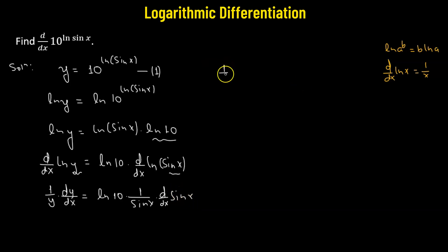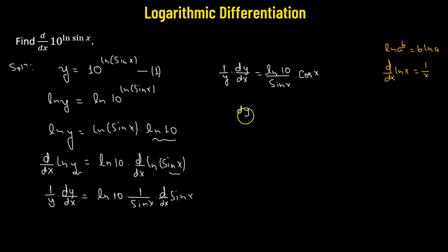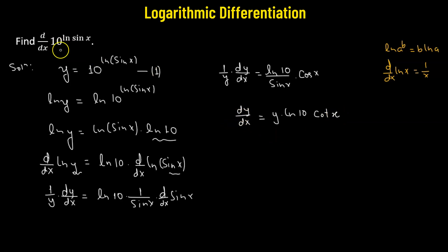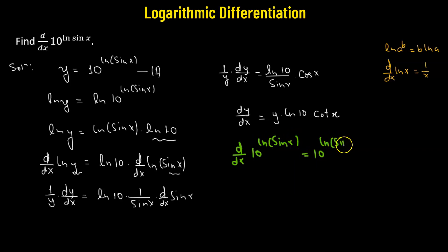So we have 1 over y times dy/dx equals natural log of 10 divided by sine x, times the derivative of sine x which is cosine x. To find dy/dx, we cross multiply y to the right-hand side. We get y times log of 10 times cosine over sine. The ratio cosine over sine is the cotangent function. Finally, replacing y with 10 raised to the power of log of sine x, the required derivative equals 10 raised to the power of log of sine x, multiplied by natural log of 10, multiplied by cotangent x.